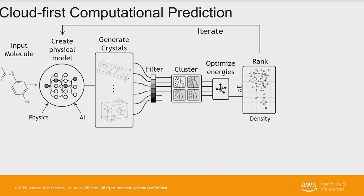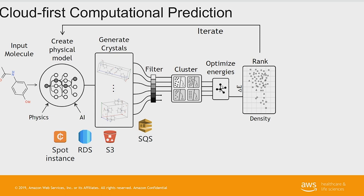We've implemented this from the beginning on AWS. Specifically, we use S3 buckets to create a data lake of all of the possible crystal structures. We store the structural data in S3 buckets, and RDS is used to store workflow and methods information. We use an SQS queue to power the pipeline from generating crystals through the ranking — in the queue we're only storing the structural IDs, not the structural information itself, which stays in the S3 bucket, so there's limited time wasted moving things around.